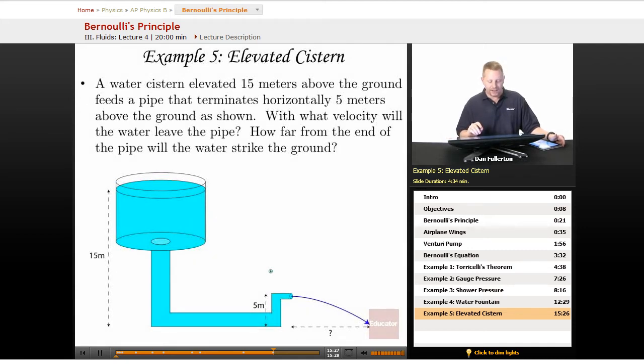At one more, an elevated cistern problem. We've got a water cistern that's elevated 15 meters above the ground and it feeds a pipe that terminates horizontally five meters above the ground as shown. With what velocity will the water leave the pipe, and how far from the end of the pipe will the water strike the ground?